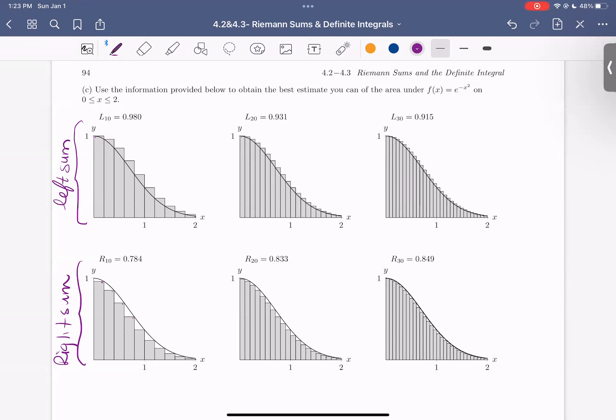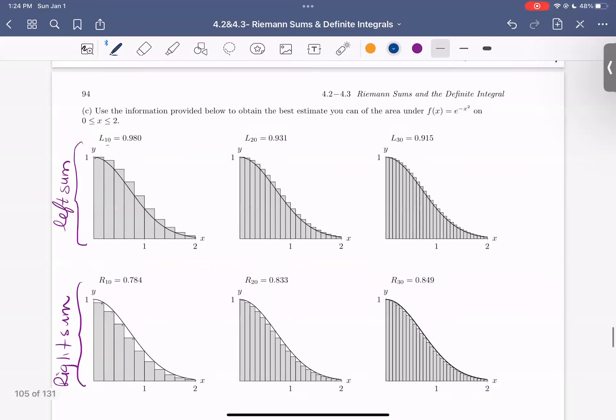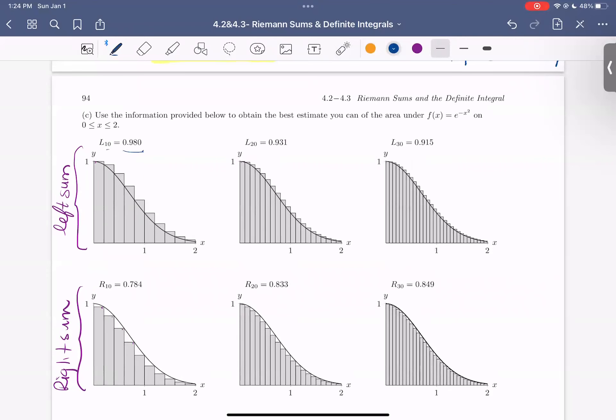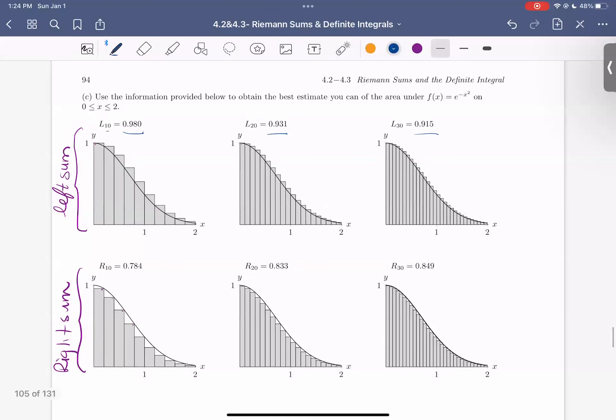And notice what happens with these areas. So we get using 10 rectangles, we have 0.98. Using 20 rectangles, we have 0.931. 30 rectangles, 0.915. And for the right rectangle, right side, we get 10 rectangles, 0.78, 20, 0.83, 30, 0.849.